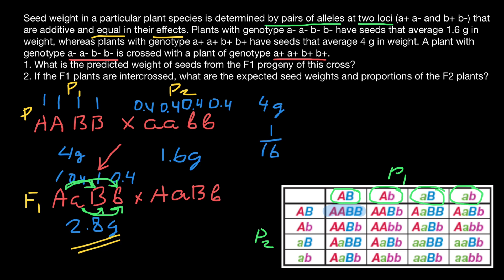Genotypes with three dominant alleles and one recessive occur four times out of 16. Three dominant alleles contribute 3 grams and one recessive allele contributes 0.4 grams, giving a seed weight of 3.4 grams. The frequency is 4/16.